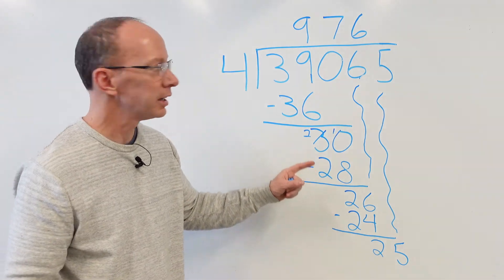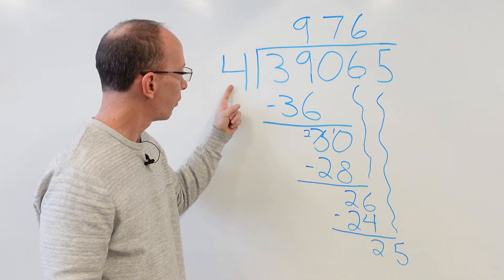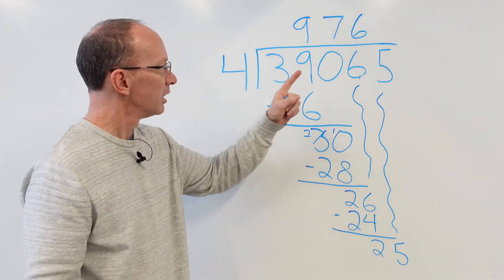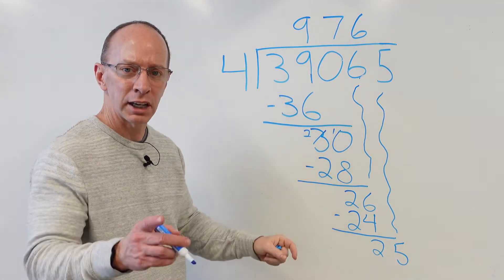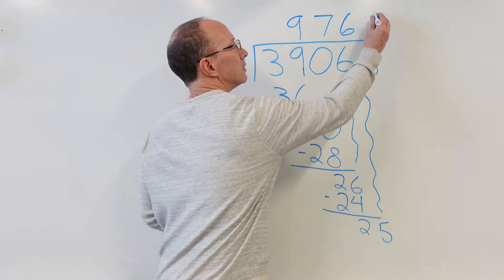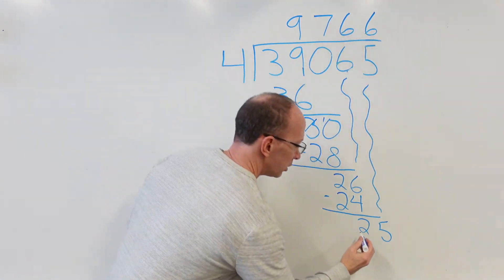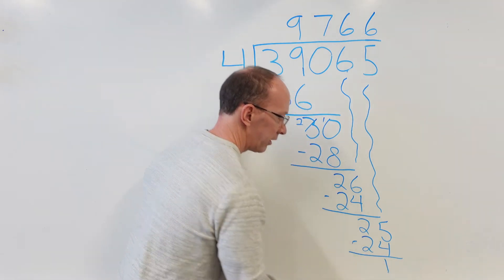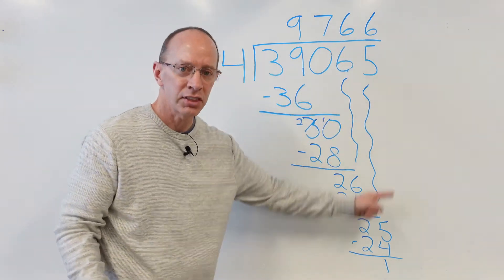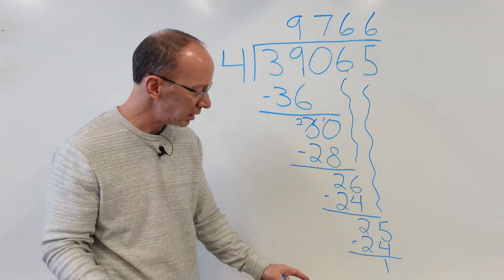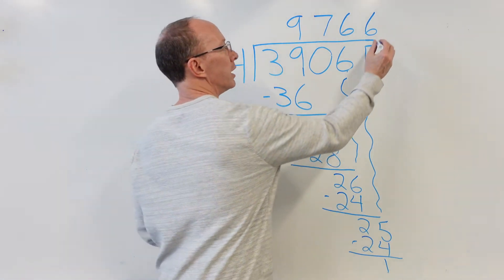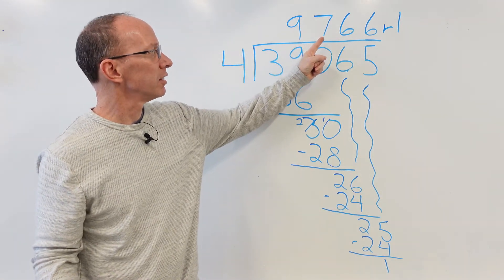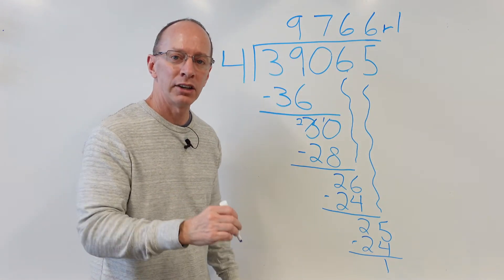Getting toward the end. How many times can I put 4 into 25? 6 times 4 is 24. Subtract it — we have 1 left over. Nothing to drop down, nothing to repeat. That is our remainder: remainder 1. Our answer is 9,766, remainder 1.